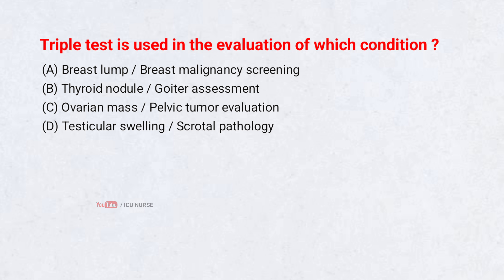Triple test is used in the evaluation of which condition? A. Breast lump, breast malignancy screening. B. Thyroid nodule, goiter assessment. C. Ovarian mass, pelvic tumor evaluation. D. Testicular swelling, scrotal pathology. Correct answer: A.